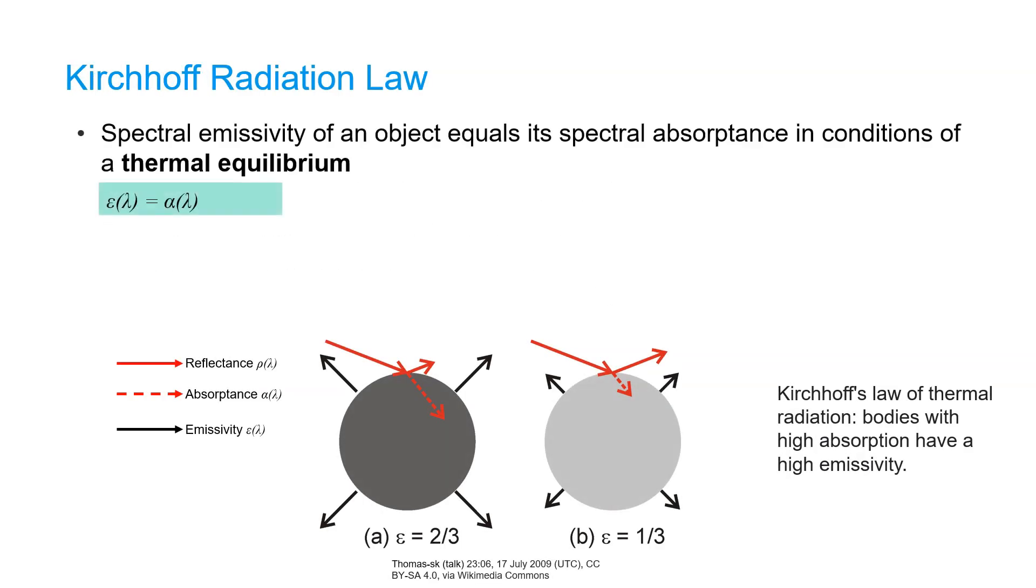Under conditions of thermal equilibrium, Kirchhoff's radiation law describes that reflectance, absorptance, and emissivity are related to each other. The emissivity of an object equals its absorptance, and therefore bodies with high absorption have a high emissivity. This is under the assumption that objects are opaque to thermal radiation, meaning that tau transmissivity equals 0. Therefore emissivity and reflectance are complementary and equal to 1 when they are summed.